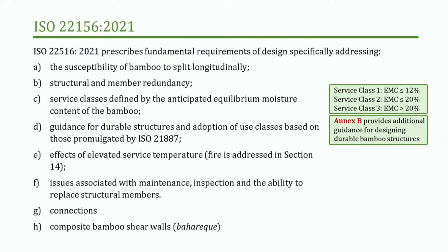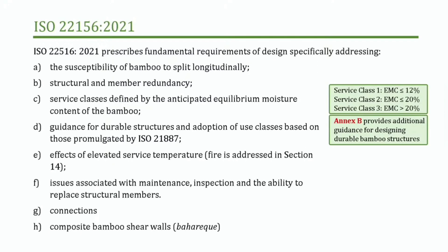There's direct discussion of connections, and this code still includes barricade construction — the rendered walls of very light bamboo. One of the things important in designing bamboo structures is we're not going to design them for all environments. We emphasize protection by design and durability by design: having large roof eaves, making sure that bamboo doesn't get wet, protecting it from UV. We permit the use of bamboo in service categories 1, 2, and 3.1, with limited use in 3.2, and we certainly would not want to be designing in categories 4 and 5.